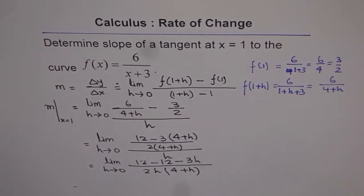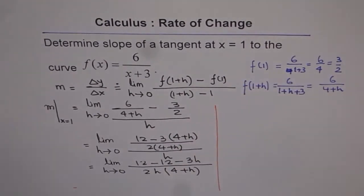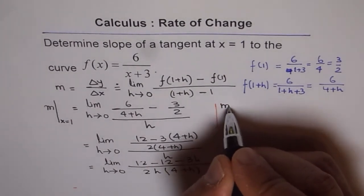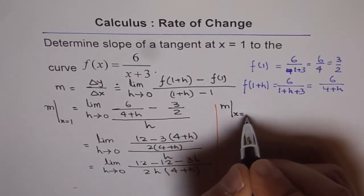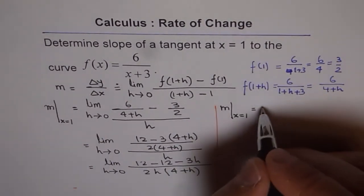Now, let me solve it further on this side of the page. So, we get, we are trying to find slope of tangent at x = 1, correct? Now, so we get this. Up to this place, we just limit.